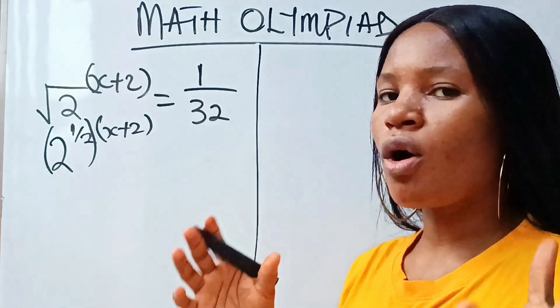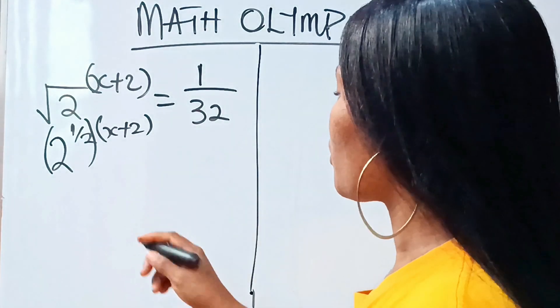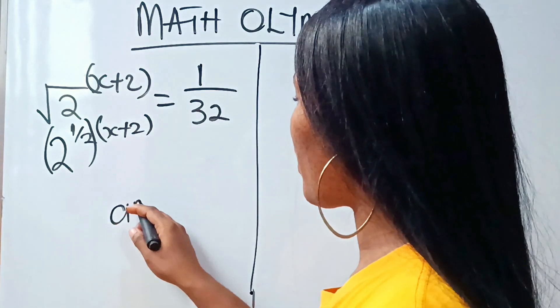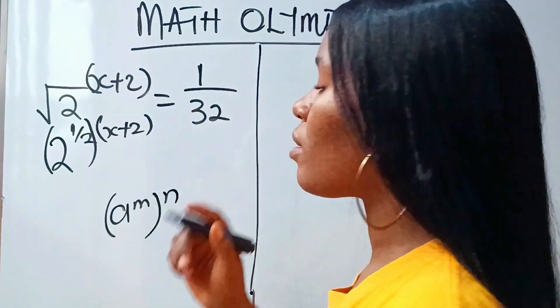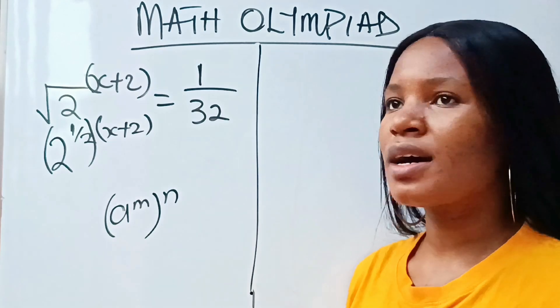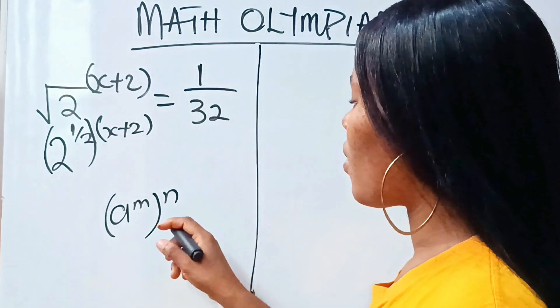Now, recall using law of indices. When you have a to the power of m and your number is also raised to another power, the law of indices say that to get one power, we just have to multiply the two powers together.